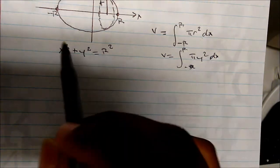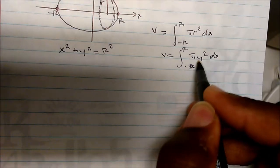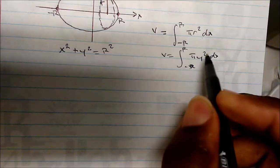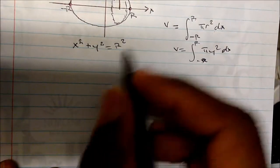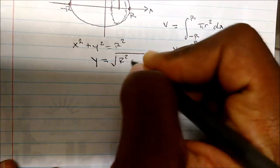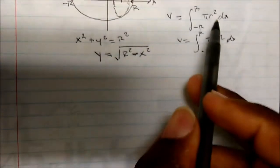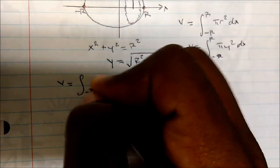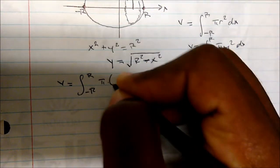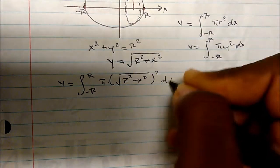I put the y there just to show that y is what I'm plugging in for r squared. I do not like this notation, but I did that just to illustrate. So if I move everything over to one side and solve for y, then y equals the square root of r squared minus x squared. Now I have my y and I can plug into my formula. So the volume is the integral from negative r to r of π times the square root of r squared minus x squared, squared, dx.